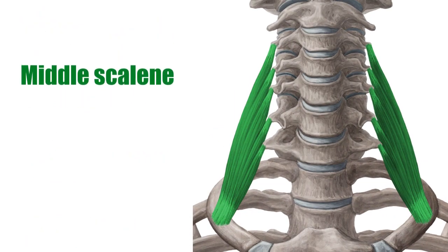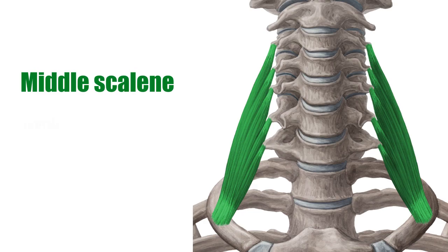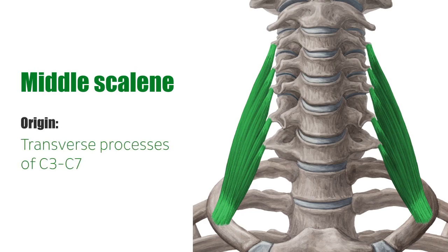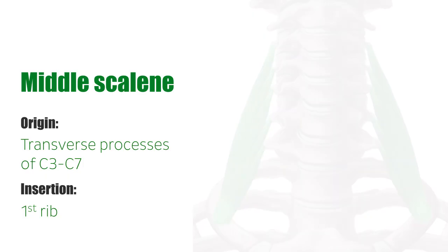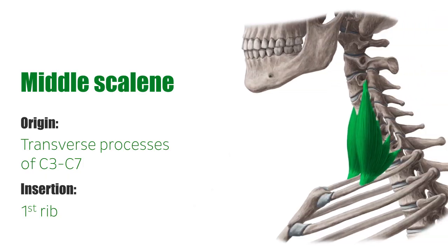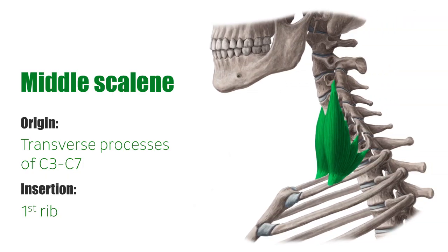The middle scalene muscle originates at the posterior tubercles of the transverse processes of C3 to C7, i.e. the third to seventh cervical vertebrae, and has its insertion at the first rib behind the groove for the subclavian artery. It is situated dorsally to the anterior scalene muscle.